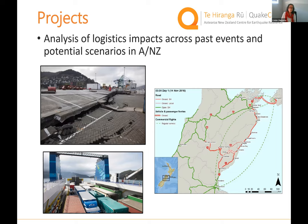We're going to build on this in different ways. First, we'll consider what would happen if the ferry terminals in Wellington and Picton were taken out by an earthquake and were unavailable for extended periods — how logistics and supply chain operations would recover, particularly the movements between the North and South Island, and where the transport bottlenecks would be.